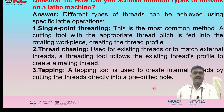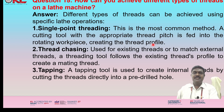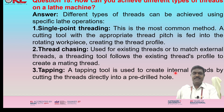How can you achieve different types of threads on a lathe machine? Different types of threads can be achieved using specific lathe operations. Single-point threading: the most common method — a cutting tool with the appropriate thread pitch is fed into the rotating workpiece, creating the thread profile. Thread chasing: used for existing threads or to match external threads — a threading tool follows the existing thread profile to create a mating thread. Tapping: a tapping tool is used to create internal threads by cutting threads directly into a pre-drilled hole.